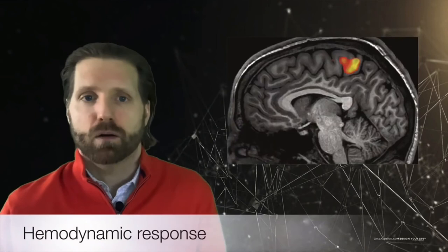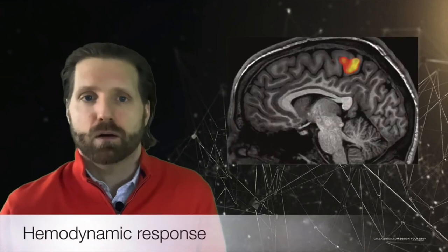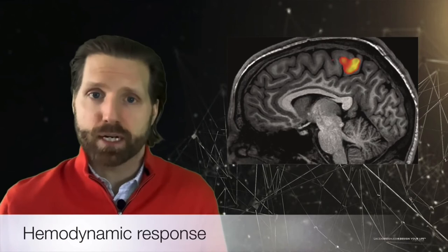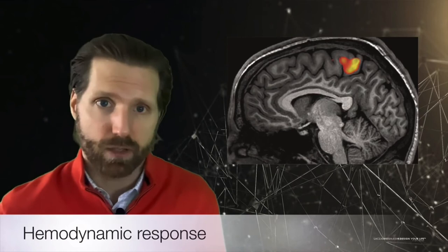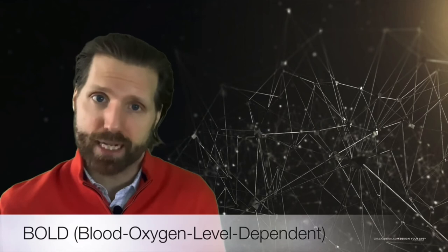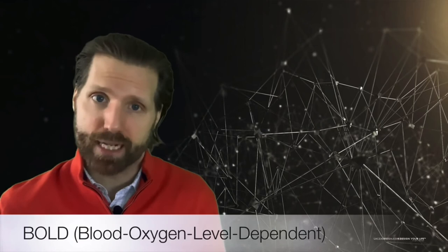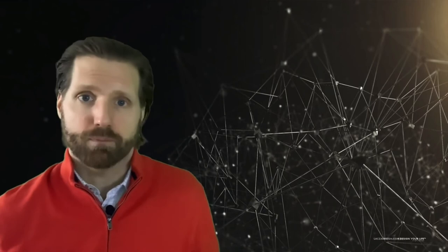fMRIs employ a different technique. They measure blood flow or the hemodynamic response. Through this response, blood carries sugar and oxygen to neurons and the consumption of oxygen gives off a signal that can be detected by an MRI based on different magnetic qualities given off in those areas. This is called the blood oxygen level dependent imaging or BOLD contrast imaging. This kind of imaging provides better resolution than PET scans, offering a more precise view of specific activated brain regions. With that knowledge in mind, we can begin to understand findings of this review article.